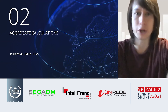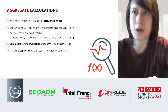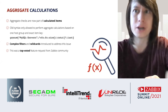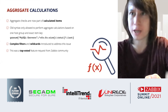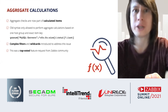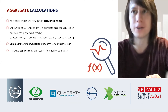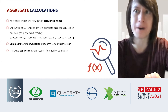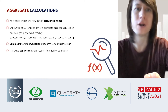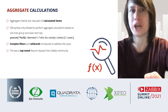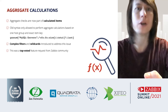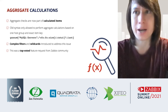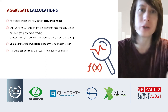We also modified aggregate calculations. In the past, aggregate calculations were a separate item type, which was confusing because calculated items and aggregate checks performed very similar functionality but were configured completely differently — for calculated items you used an arbitrary item key with logic in the formula, while for aggregate checks the formula was defined within the item key itself with strict syntax. We solved this by making aggregate checks part of calculated items, so now it's all in the formula field. Additionally, the old syntax only allowed aggregate calculations based on one host group and an exact item key, so we introduced complex filters and wildcards to address this limitation.